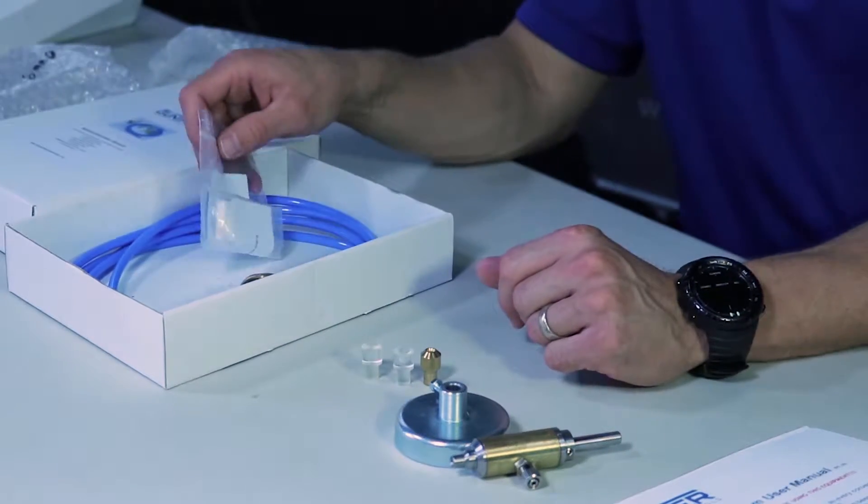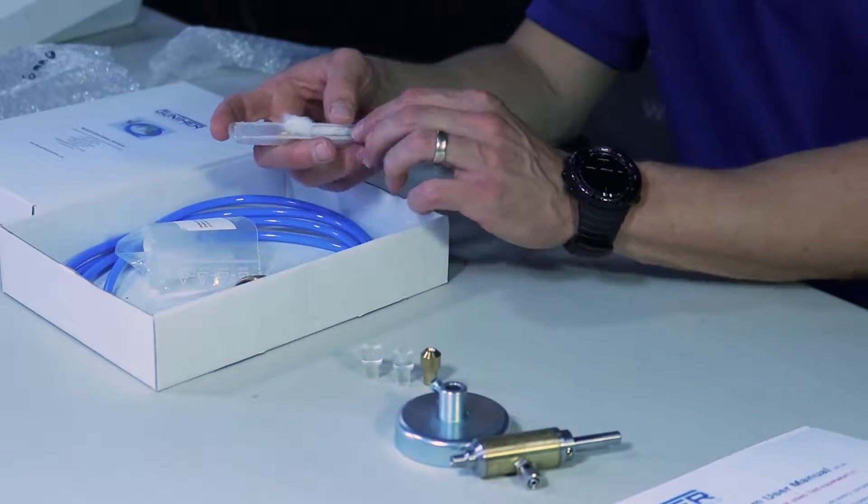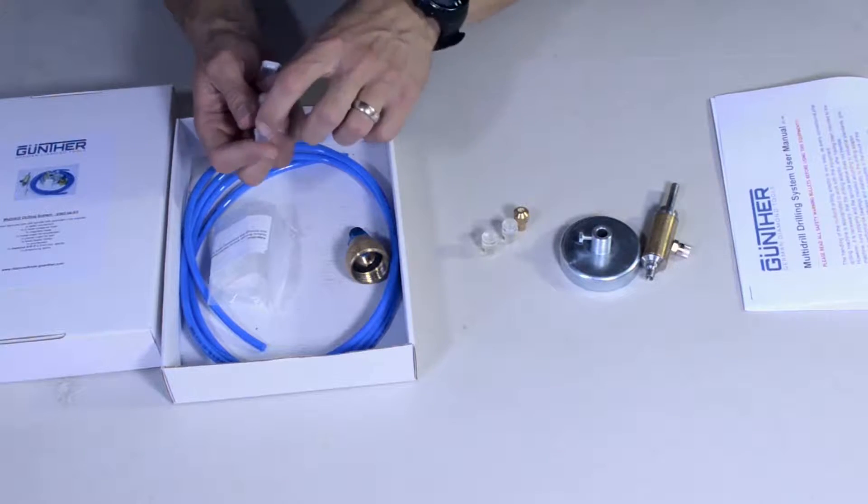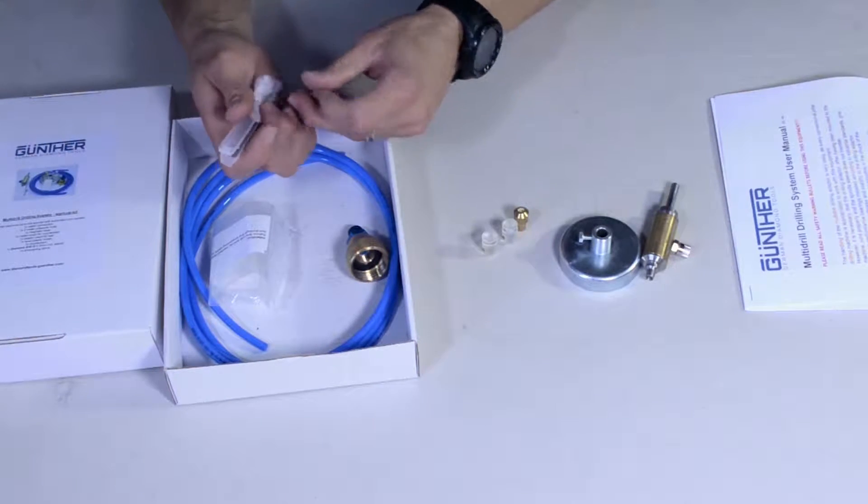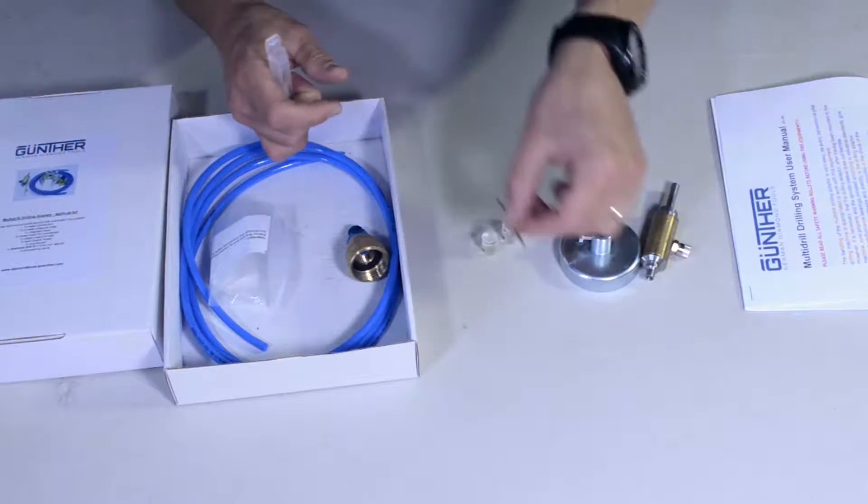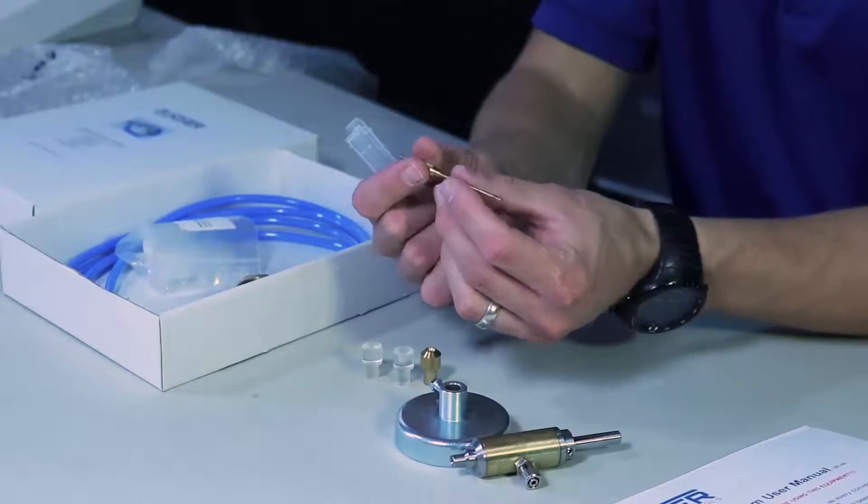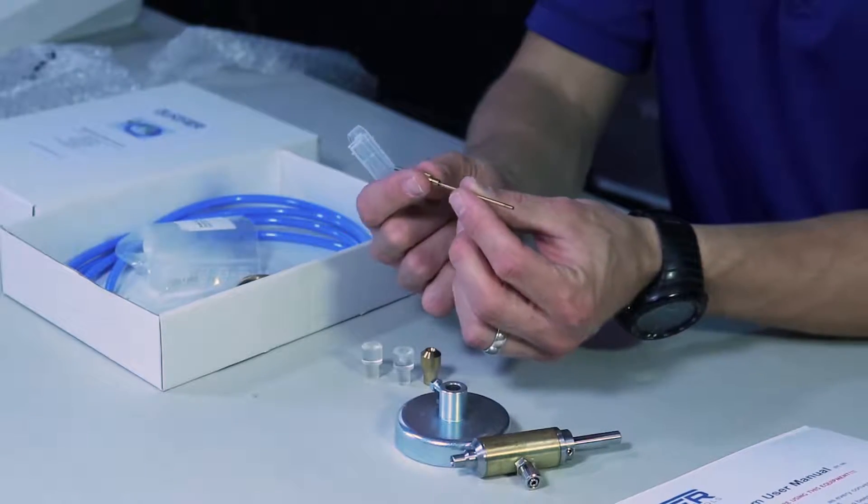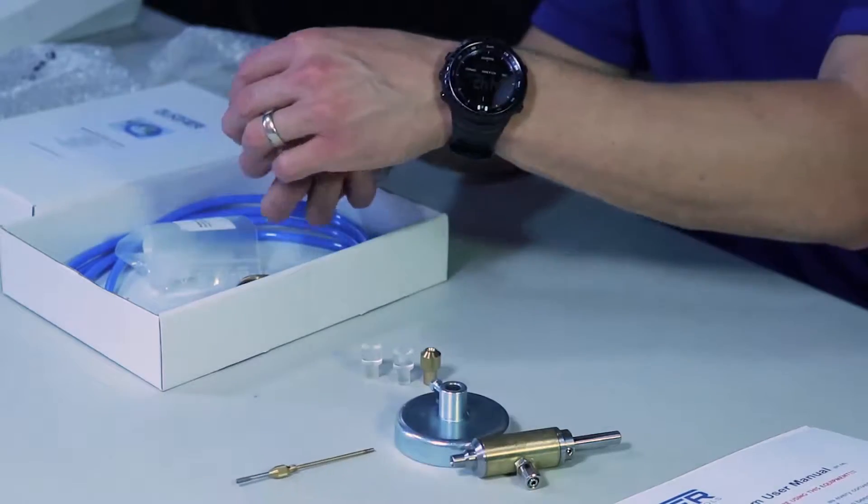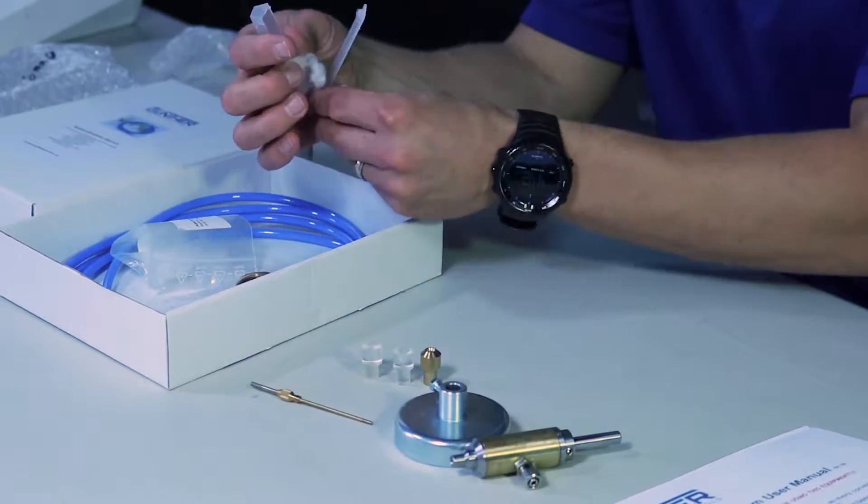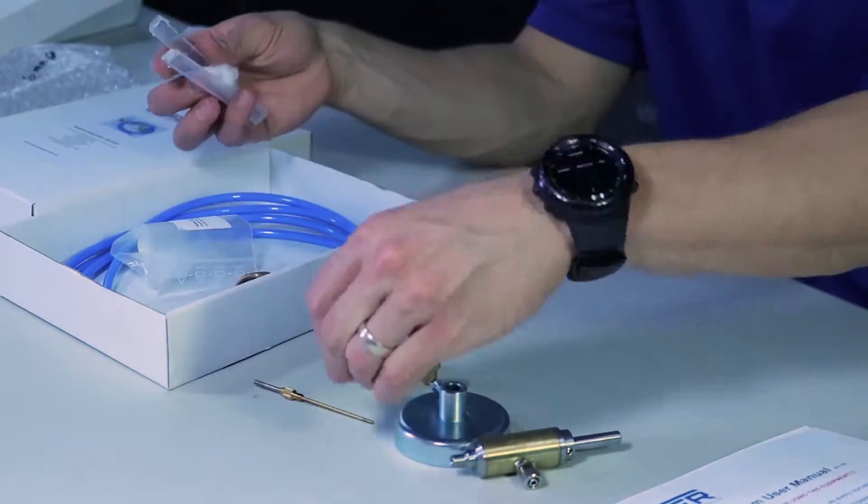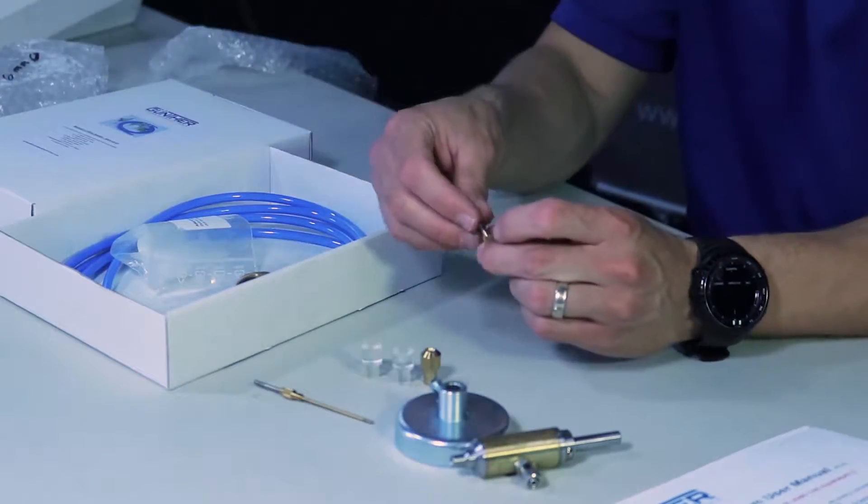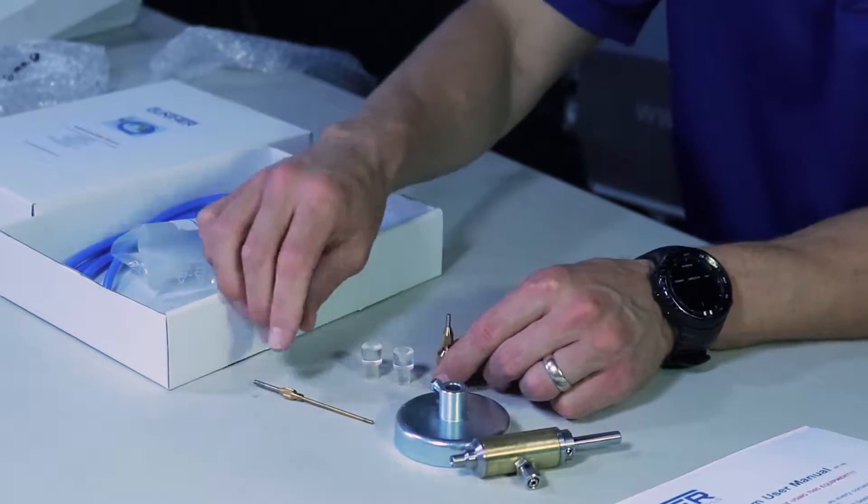You will receive a 2.5mm drill bit and counterpart. This is the 2.5mm drill bit with the ejector needle. This is your counterpart. It screws into here and this goes into here.